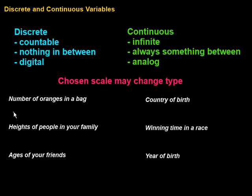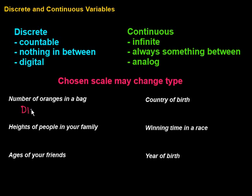Let's take a look. This first one: the number of oranges in a bag — is that discrete or is that continuous? Well, it's countable. How many oranges could be in the bag? There could be one, there could be two, there could be five, but there couldn't be 1.5. So there are discrete values with nothing in between. This would be an example of a discrete variable.